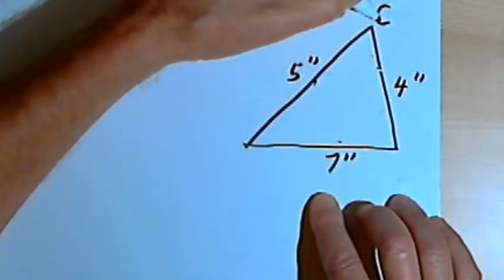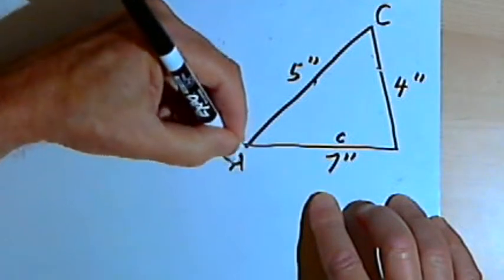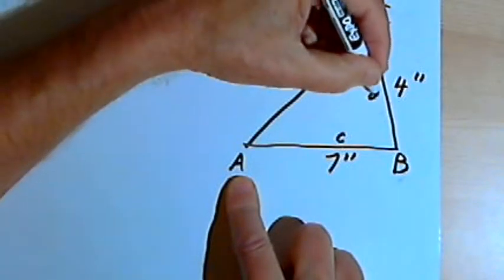That means the side opposite angle c will call small c. I'll label the other two angles a and b. The side opposite angle a will be small a.